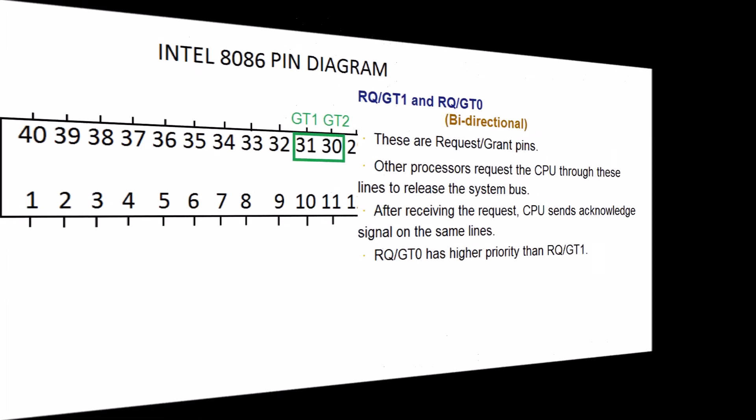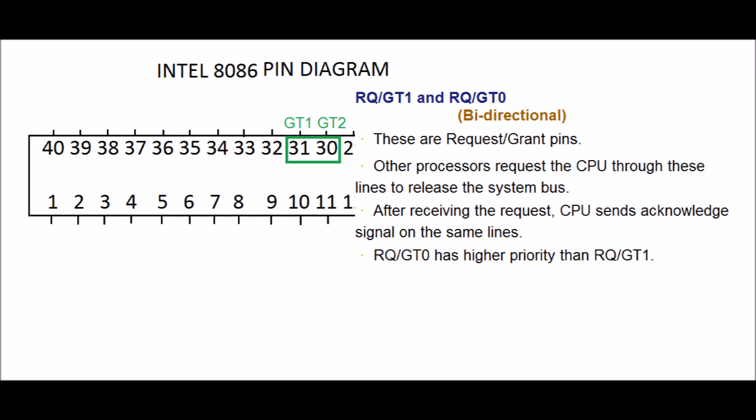RQGT1 and RQGT0. PIN 30 and 31, bidirectional. These are request grant pins. Other processors request the CPU through these lines to release the system bus. After receiving the request, CPU sends acknowledgement signal on the same lines. RQGT0 has higher priority than RQGT1.